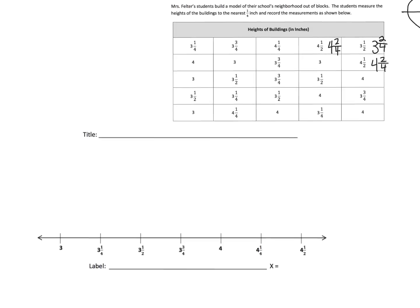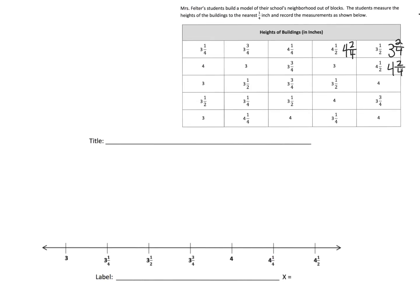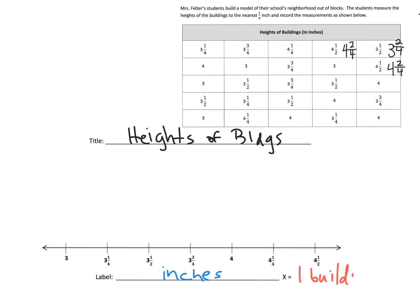I'm going to zoom out a little bit and now let's start plotting. The first thing we need to do is make a title, and we're going to take the title from our table: 'Heights of Buildings.' Down here we need to indicate what these numbers represent — those are inches, so we're going to label that 'inches.' The X's we place here are each going to represent one building. So we've got our labels and now we're ready to start plotting our line plot.